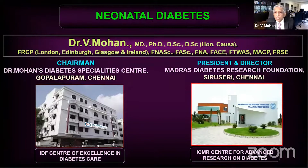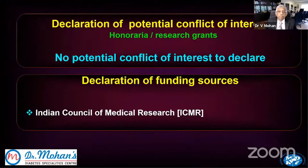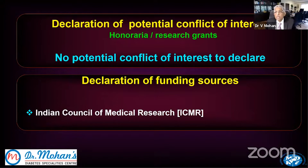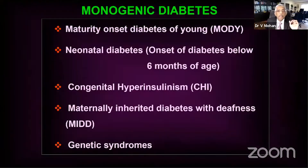On to this topic of neonatal diabetes — I have no conflict of interest to declare. For many years now we have been an ICMR advanced center. We first became an ICMR advanced center for genomics of diabetes; now we have been made an advanced center for diabetes in general. So when you talk about monogenic forms of diabetes...